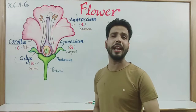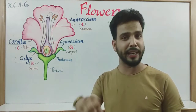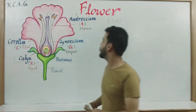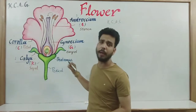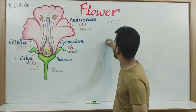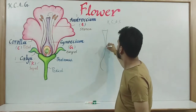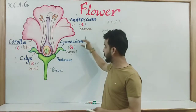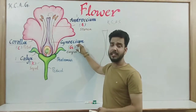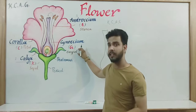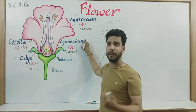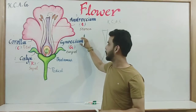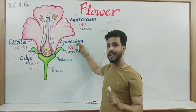After androecium, the last and innermost part of the flower is known as gynoecium. In the diagram I have shown it with purple color. Gynoecium is represented with capital G, and a single unit of gynoecium is known as carpel. Gynoecium is the female part of the flower, also known as pistil.